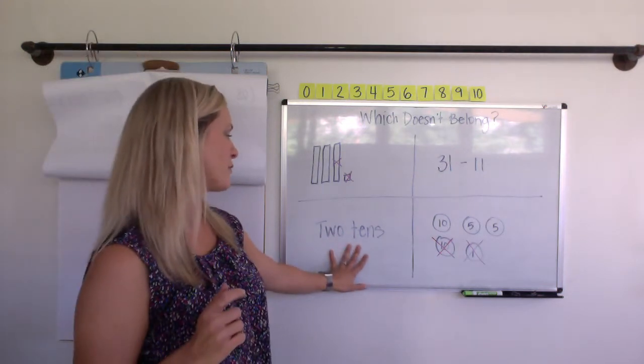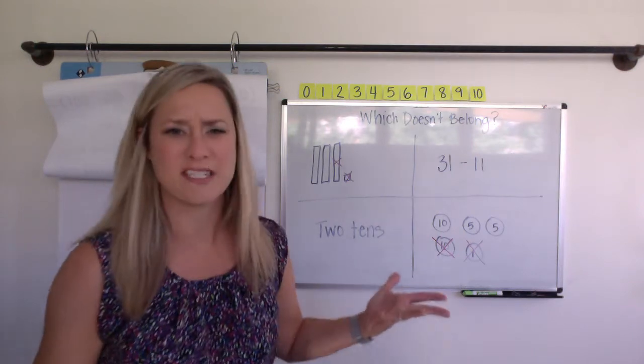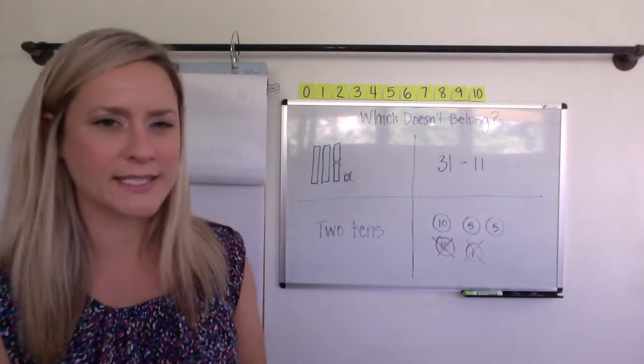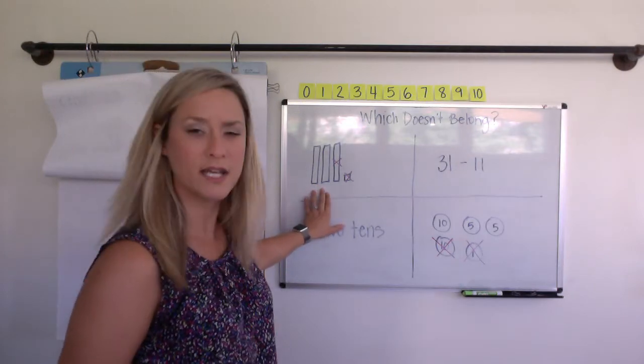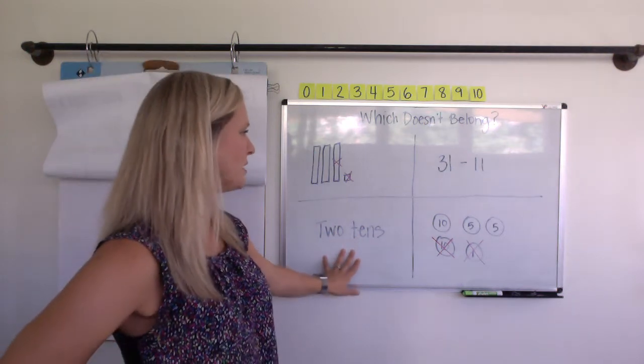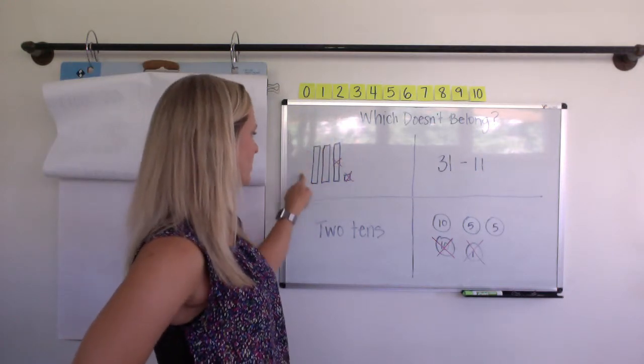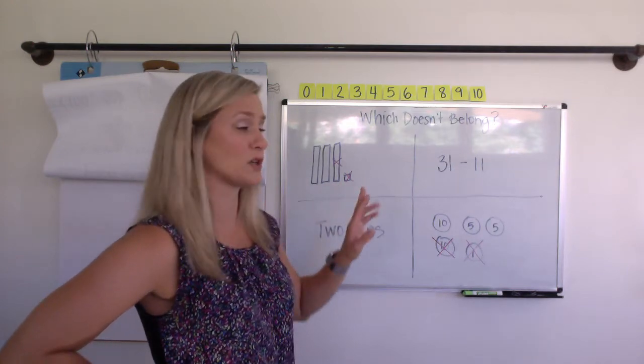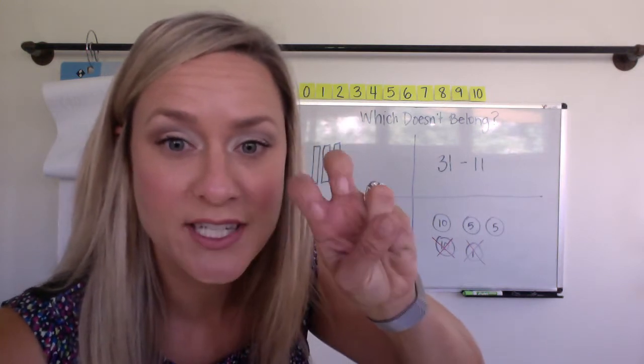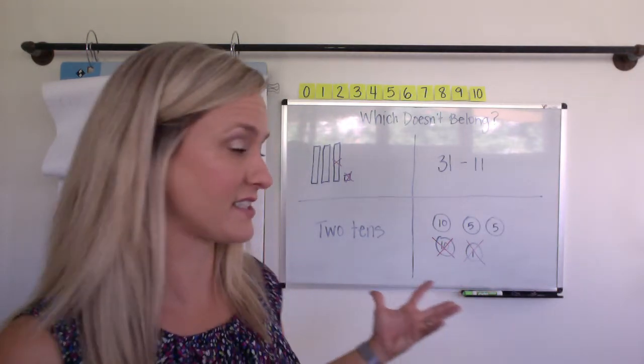Maybe you would say this one doesn't belong. So I would say the bottom left doesn't belong because it just says two tens. And then maybe somebody would say, well, but this one is also showing two tens. So here is the number 31, and then they took off a 10 and one more. So they took off 11. And what's left? Two tens right here. So it actually does fit in, even though it doesn't really look like it.